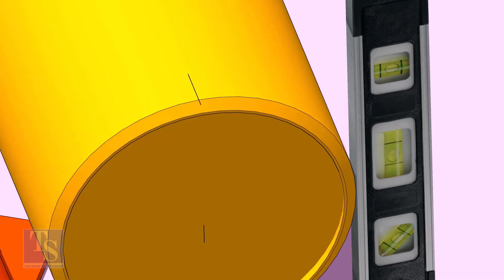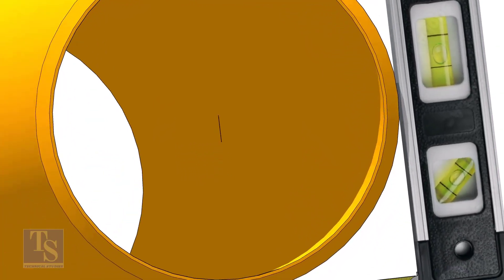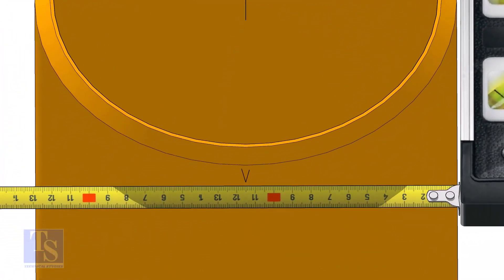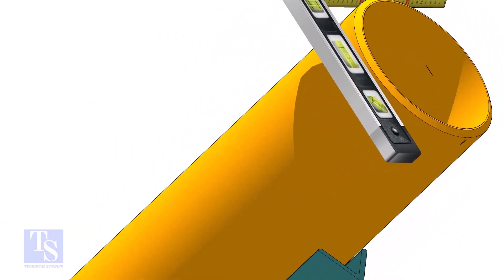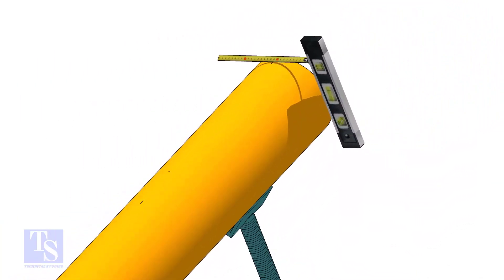Hold a level bottle firmly and vertical at the side of the pipe as shown. Mark half OD at the top and the bottom side of the pipe. Cross check the dimension from the opposite side to ensure the marking is correct.